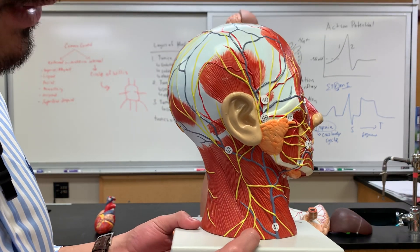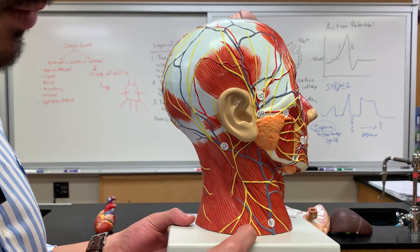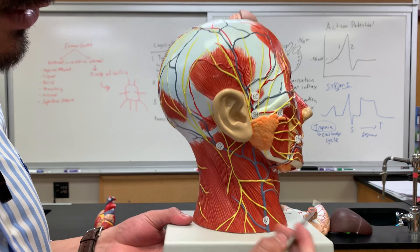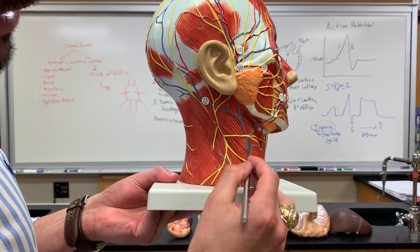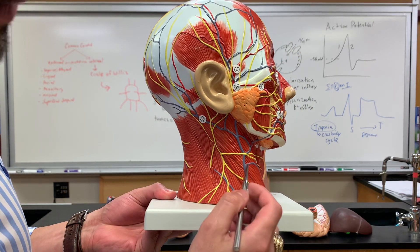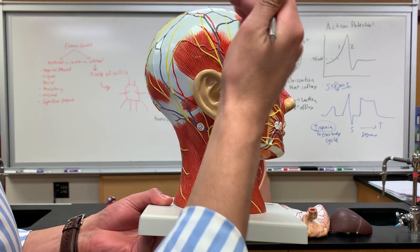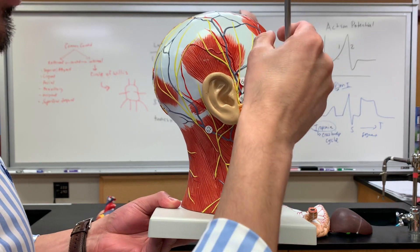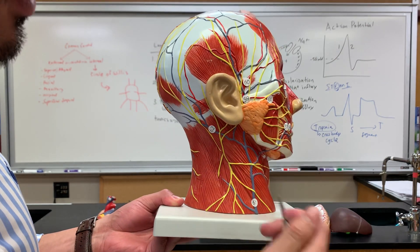All right Bobcats, so in this video I'm gonna go over the blood vessels here on the head model. The first thing I want to point out is the external jugular vein. Remember, the veins are getting blood back to the heart.